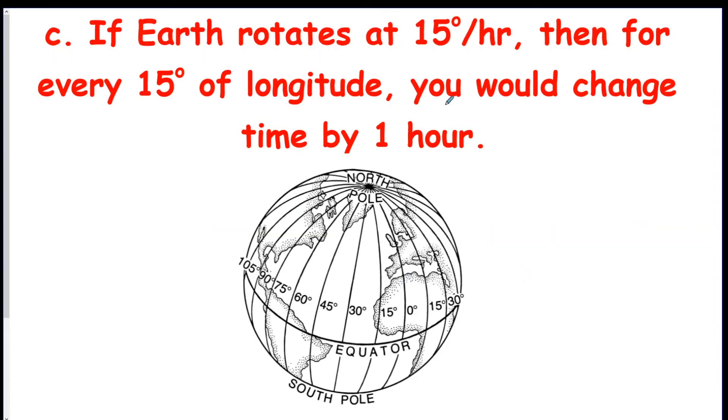This is actually how they came up with the time zones. So if the Earth rotates at 15 degrees per hour, then for every 15 degrees of longitude, you change the time by an hour. So they figured, okay, we'll start at the prime meridian, which we talked about was the main line of longitude here. So maybe one day they were like, all right, it's 12 p.m. here.